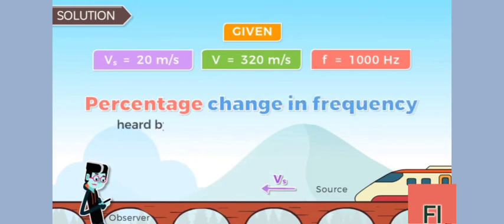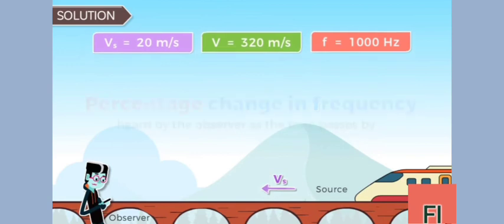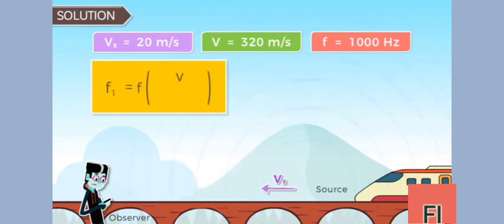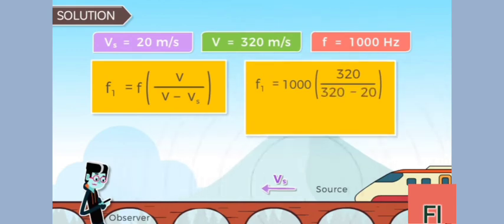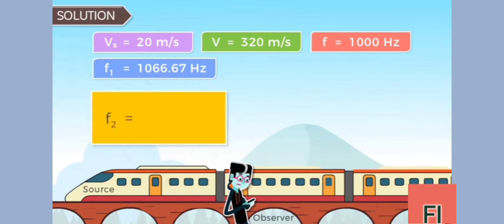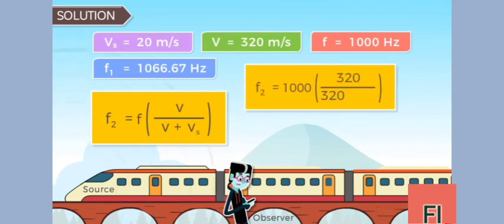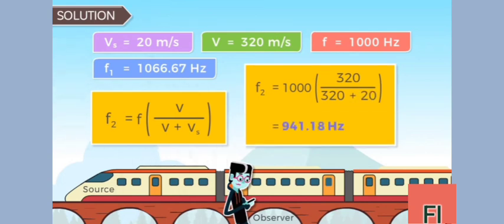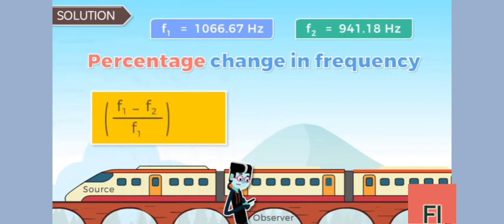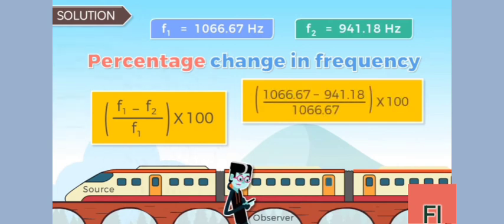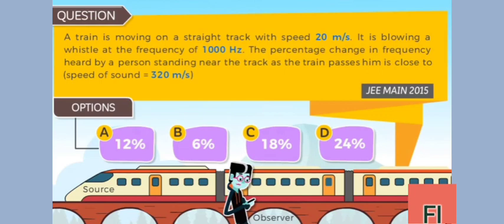We have to find the percentage change in frequency heard by the observer as the train passes by. The frequency heard while the train approaches is F1 = f × v / (v − vₛ) = 1000 × 320 / (320 − 20) = 1066.67 Hz. The percentage change in frequency is |F1 − F2| / F1 × 100, which comes out to be approximately 12%. Hence the correct answer is option A.